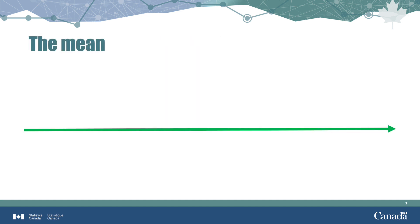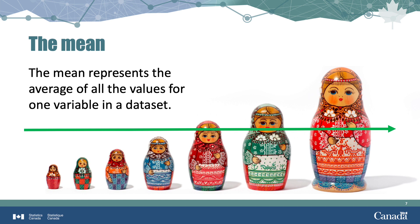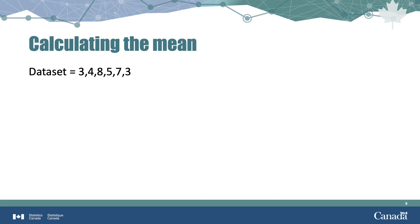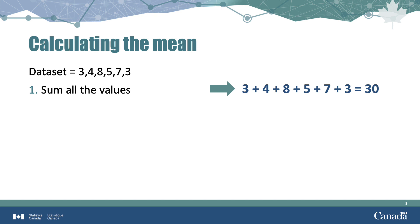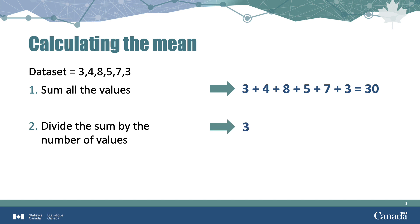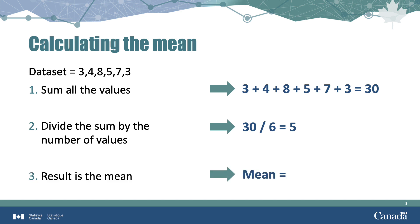The mean represents the average of all the values for one variable in a dataset. The mean is established by adding up all values, then dividing that total by the number of values. Here we see a dataset containing six values. The sum of these six values is 30. So to calculate the mean, we divide that total of 30 by the number of values in the dataset, which is 6. This leaves us with a mean or average value of 5.